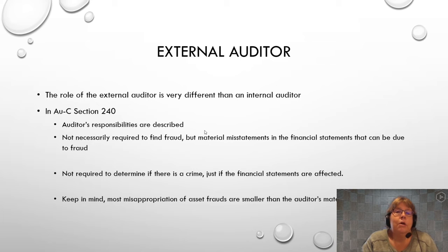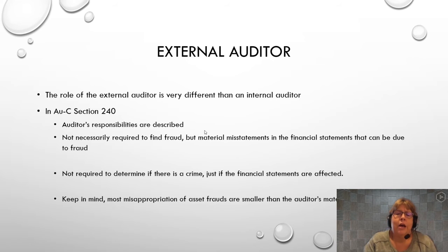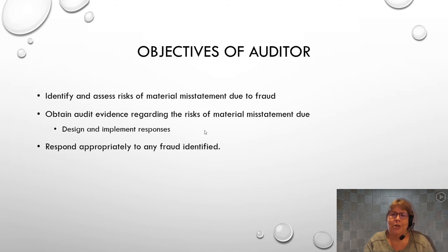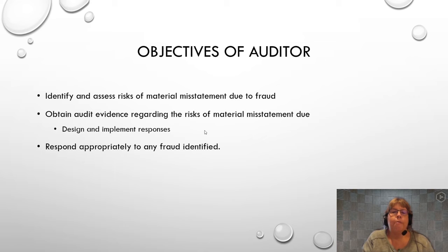Some misappropriation of asset frauds are large enough that they should show up. In the next portion of this module, you'll watch a video about a city government that had 53 million dollars stolen, which was definitely well beyond the materiality threshold. As the AICPA defines it, there are three main objectives of the auditor — first, they should be able to identify and assess the risk of material misstatement due to fraud.